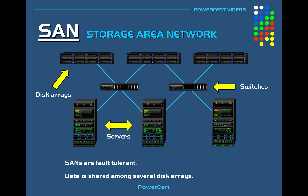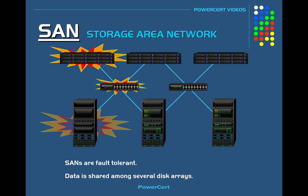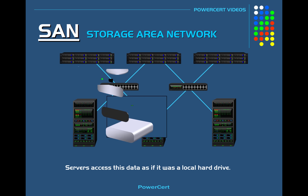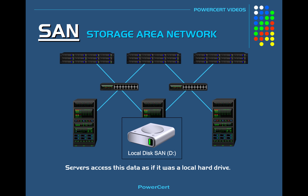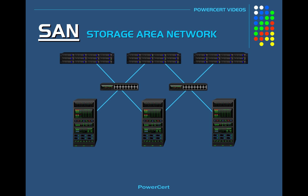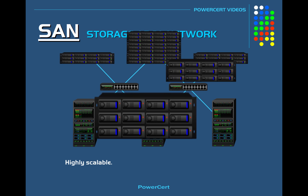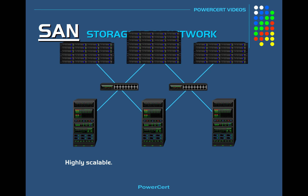The data is also shared among several disk arrays, so if a switch, disk array, or server goes down, the data can still be accessed. When a server accesses the data on a SAN, it accesses the data as if it was a local hard drive, because that's how operating systems recognize a SAN — as a locally attached hard drive rather than a shared network drive like in a NAS. SANs are also highly scalable because adding more storage space can easily be done without interruption on the network.